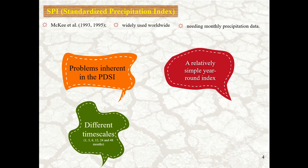When I say different timescales, it means it is focused on 1, 3, 6, 12, 24, and also 48 months as input data for calculating SPI.